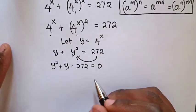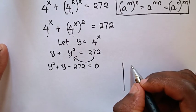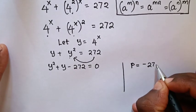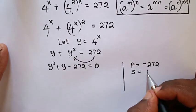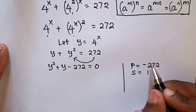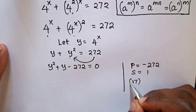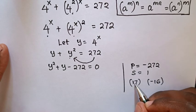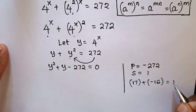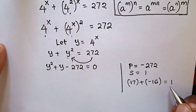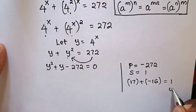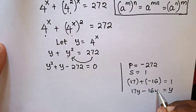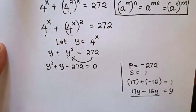Now to solve this quadratic equation by factorization: the product is 1 times negative 272, which is negative 272, and the sum is 1. The factors are 17 and negative 16, since 17 times negative 16 is negative 272 and 17 plus negative 16 equals 1. We multiply by y in both sides, giving 17y minus 16y.